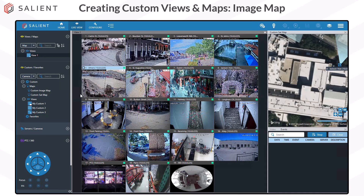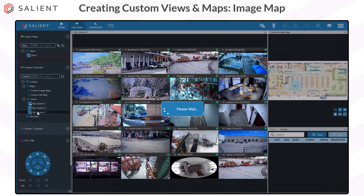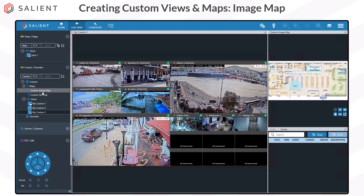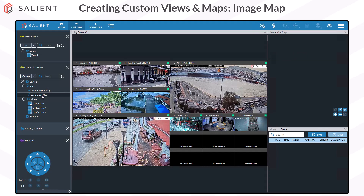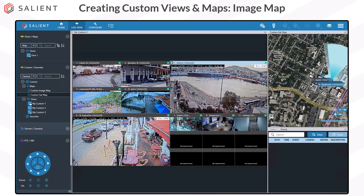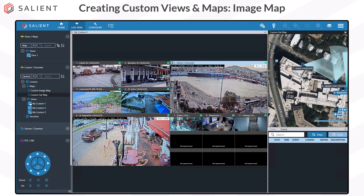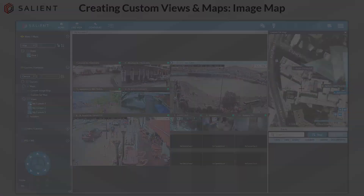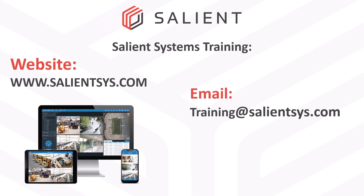Now all your custom views and maps are available in the Customs section whenever you log in. They're easy to switch to — just click on the view or map you want to see. And that's all there is to creating custom maps and views in CompleteView. If you found this video helpful, follow us for more user training videos, and if you have comments, send an email to training@salientcysts.com. Thanks for watching.